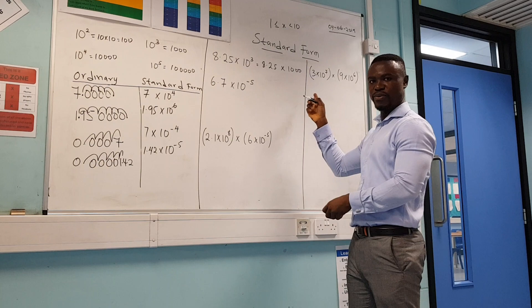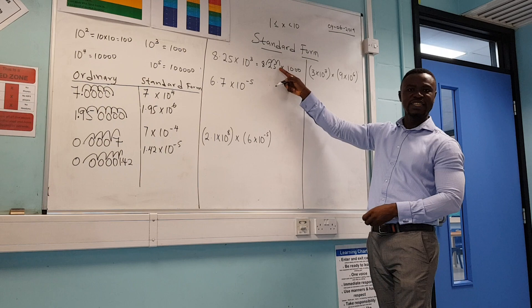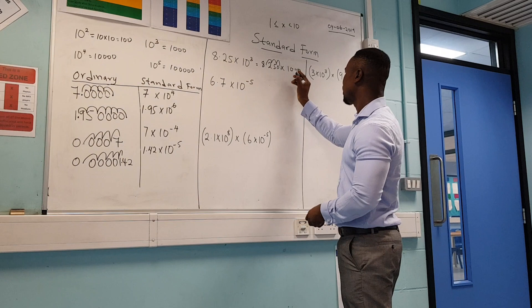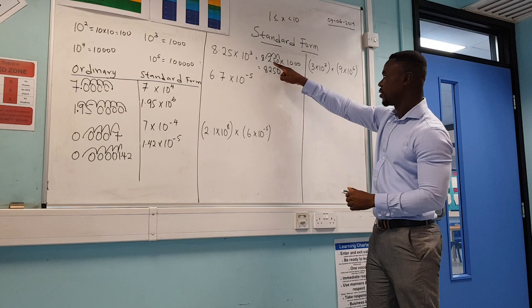Moving three places to the right: one, two, three. The third position doesn't have a number, so I put a zero in that place. So 8.25 times 10 to the power of 3 becomes 8,250 as an ordinary number. That is how we multiply by a thousand.